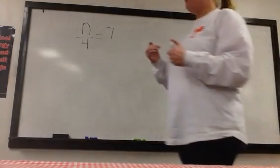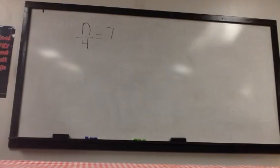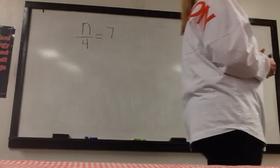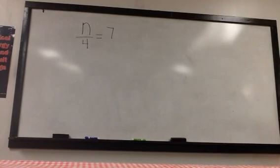Alright, with inverse operations you know that I have to do the opposite of what they do, right? So when you see the problem on the board, you see n over 4 equals 7. What does that n over 4 represent that I'm doing? What operation? Division. Yes, Davis. Division. That is a fraction. It's nothing more than division.